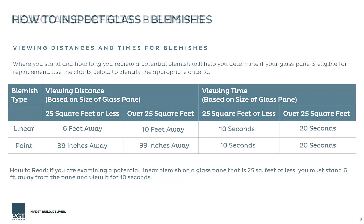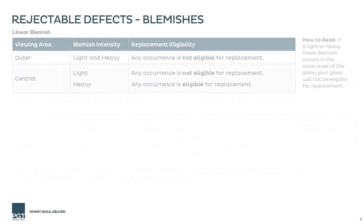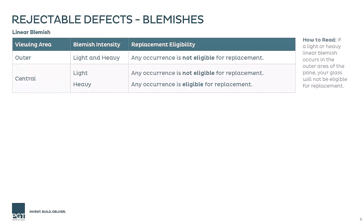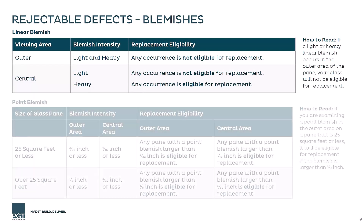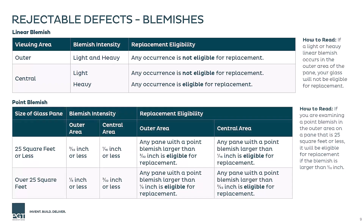The table shown outlines all the different combinations of unit size, viewing area, and blemish type, and whether or not they are eligible for replacement.